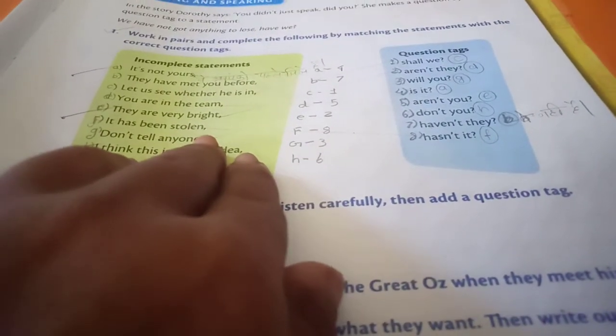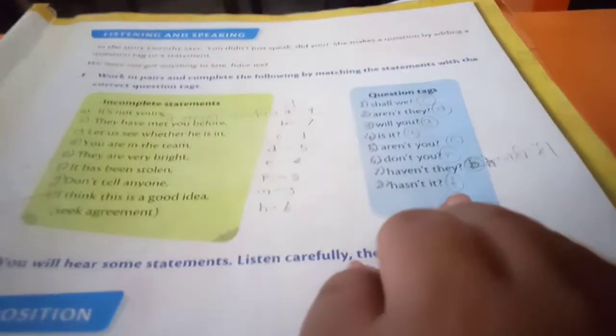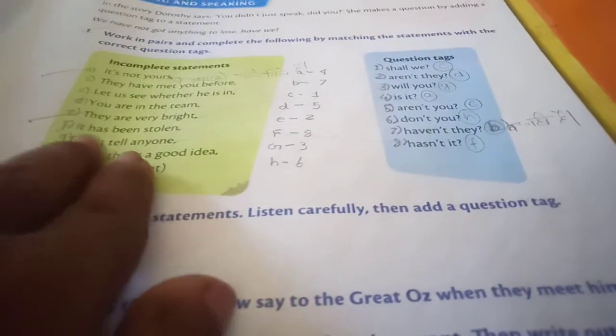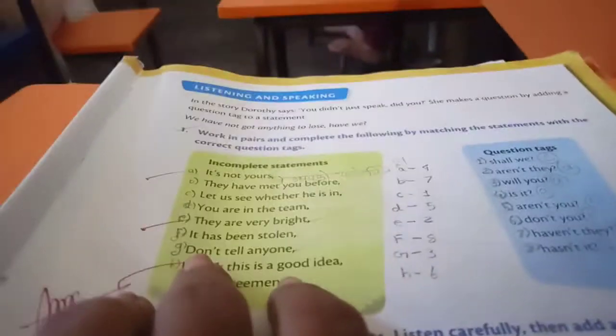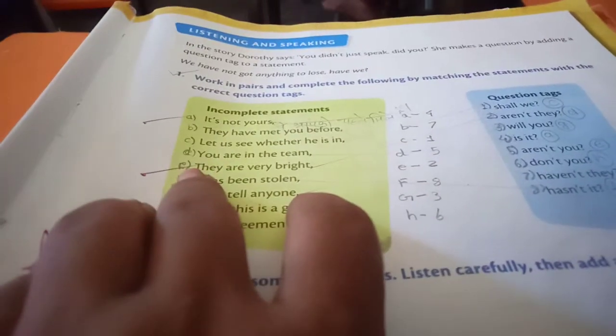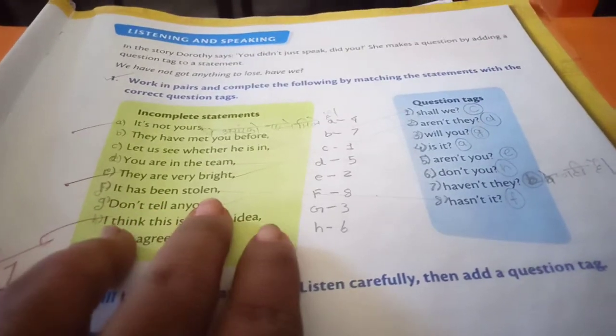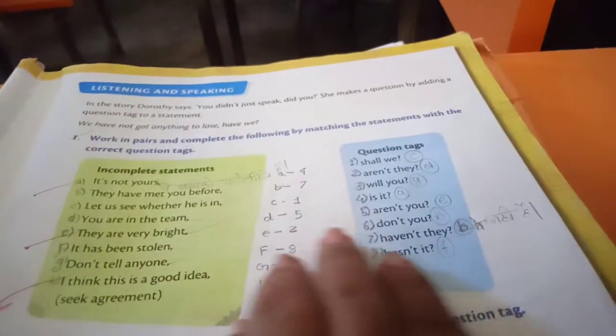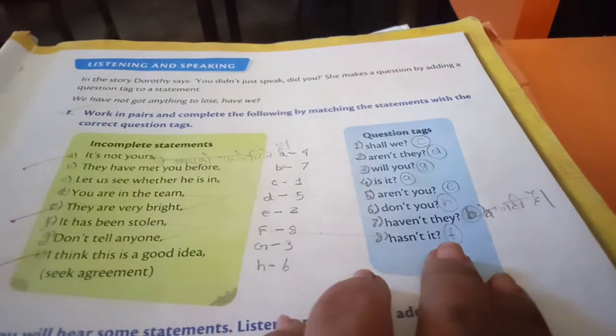It has been stolen. Hasn't it? See, hasn't it? Here is the answer: hasn't it, aren't they, aren't you, shall we. It has been stolen, hasn't it? Where is the hasn't it? See, hasn't it.